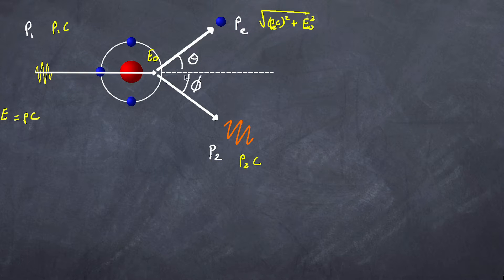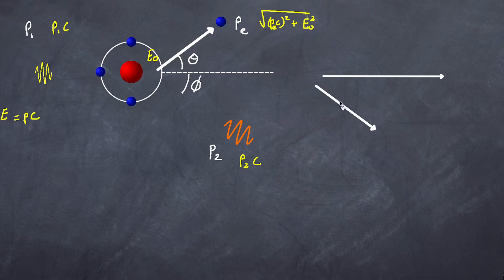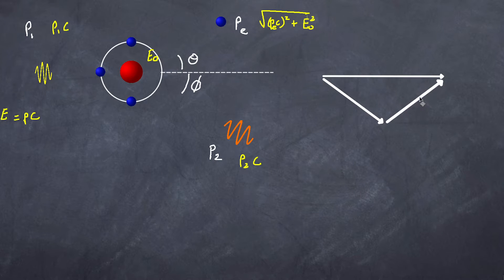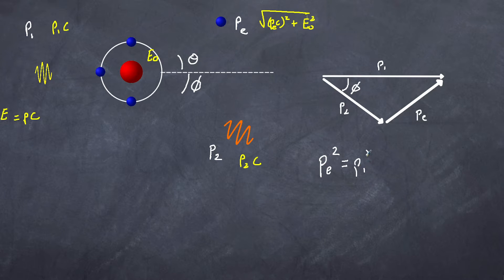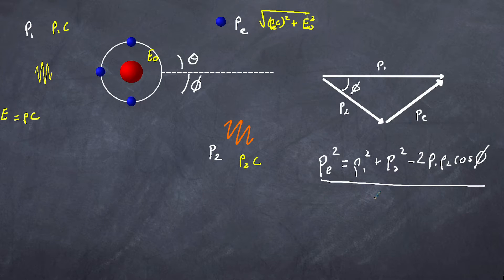Taking our vectors: the momentum vector of the incoming photon, plus the two momenta after the collision, they mathematically add up — demonstrating conservation of momentum. So P1 is the incoming photon momentum, P2 is the outgoing photon momentum, and PE is the electron momentum. The angle phi is the scattering angle. Using the cosine rule, PE squared equals P1 squared plus P2 squared minus 2 P1 P2 cosine phi.